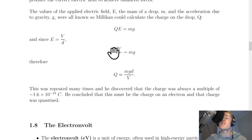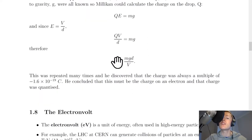Therefore we can rearrange for the charge Q. So we get Q equals MGD divided by V. Doing a calculation with Q equals MGD over V allowed Millikan to discover the charge on an electron. This was repeated many times and he discovered that the charge was always a multiple of minus 1.6 times 10 to the minus 19 coulombs. He concluded that this must be the charge on an electron and that charge was quantized.